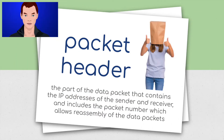Packet header: the part of the data packet that contains the IP addresses of the sender and receiver, and includes the packet number, which allows reassembly of the data packets.